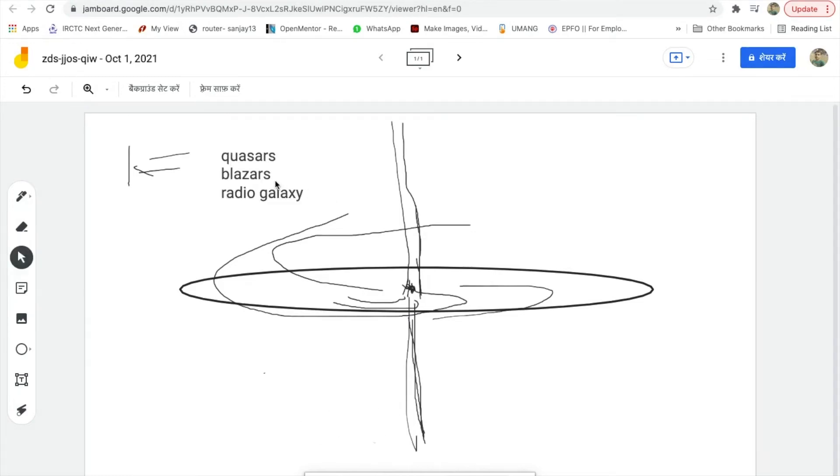As we already discussed about quasars, there are a few other sets of active galactic nuclei as well. One is quasars we discussed right now, the other one is a blazar, and the last one is the radio galaxy. They are similar active galactic nuclei, emitting the electromagnetic spectrum across the whole spectrum, but the main difference among them is regarding their perspective and projection.